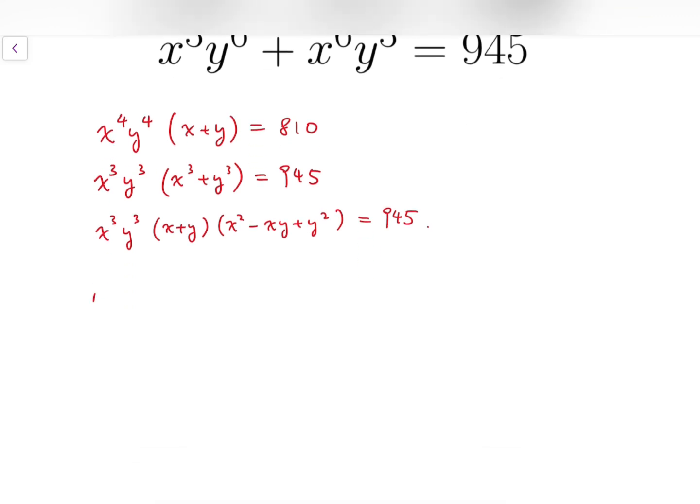Then dividing, I'll get xy over x squared minus xy plus y squared. After dividing, I will have xy at the top, and at the bottom I will have x squared minus xy plus y squared, and that should equal to 810 over 945. After simplifying, I should get 6 over 7. So it becomes a much neater equation and a quadratic one.